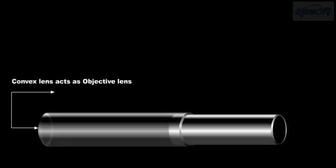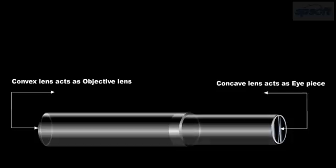How it works: A Galilean telescope consists of a convex lens of larger aperture and larger focal length, which acts as the objective lens, and a concave lens of smaller aperture and smaller focal length, which acts as the eyepiece.